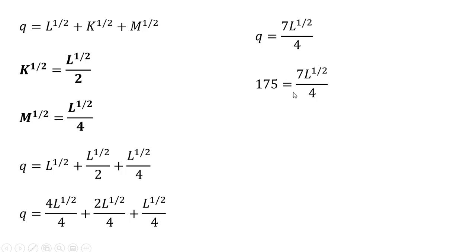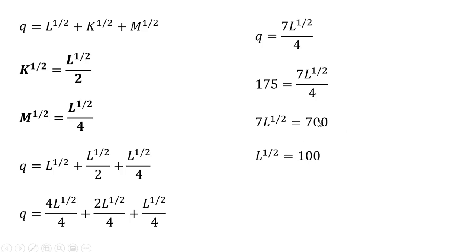Now we set Q equal to 175, since we're trying to find the cost-minimizing input mix that produces 175 units, and solve for L. Four times 175 gives us 700; 700 divided by seven gives us 100. Squaring both sides, we find that the firm would want to use 10,000 units of labor.